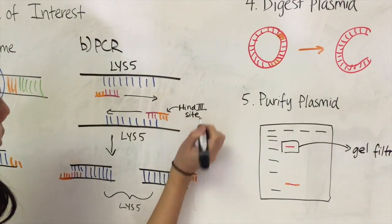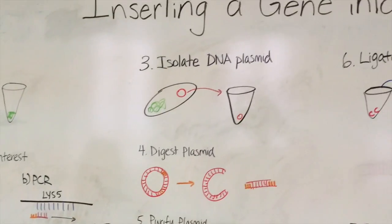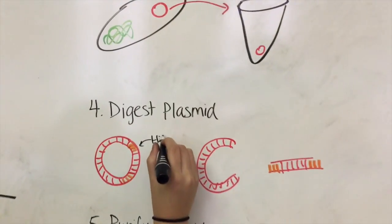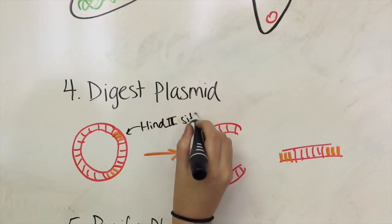Next, isolate the target plasmid from bacteria using mini, midi, or maxi prep. The plasmid should contain the same hind-3 restriction enzyme site as was used to cut out the lice-5 gene from the yeast genome.